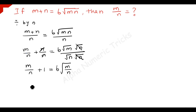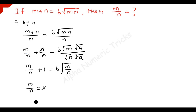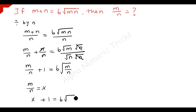Now we are going to take m over n equal to some variable x. So the problem becomes x plus 1 is equal to 6 times square root of x.